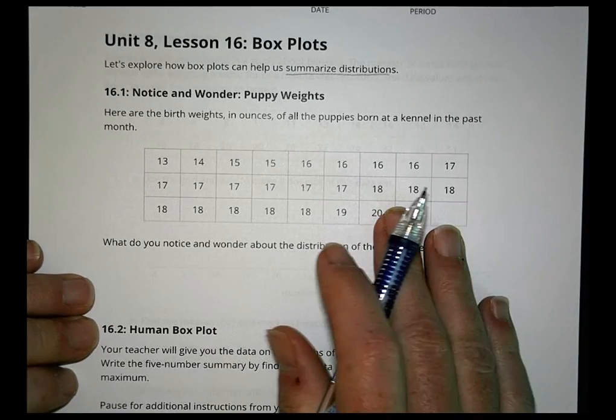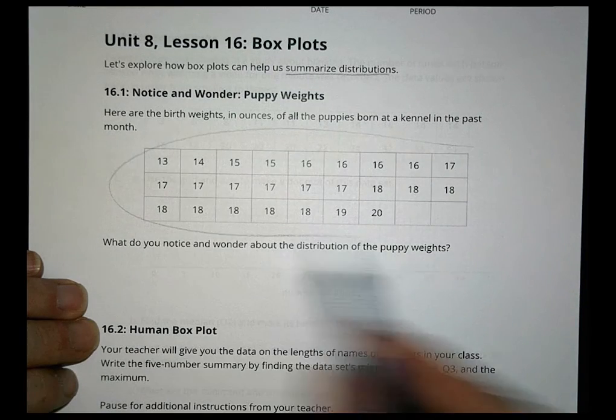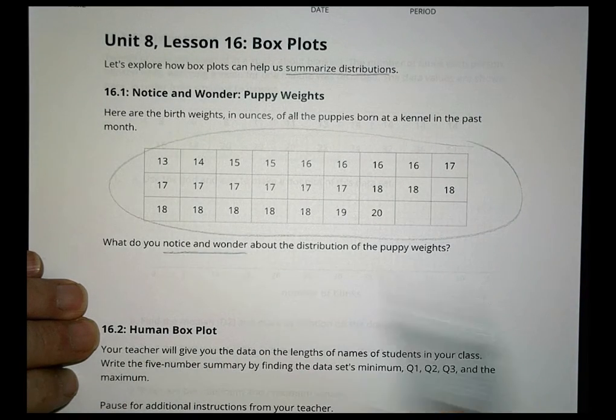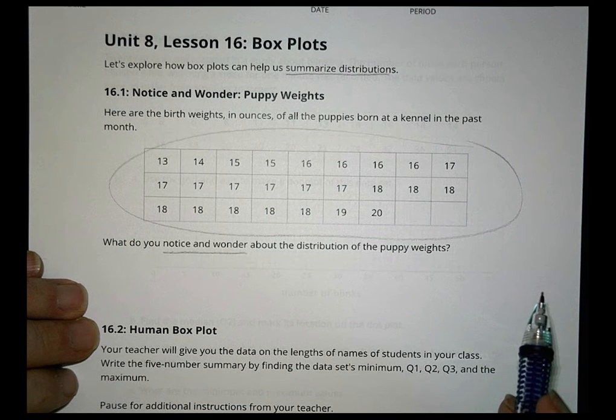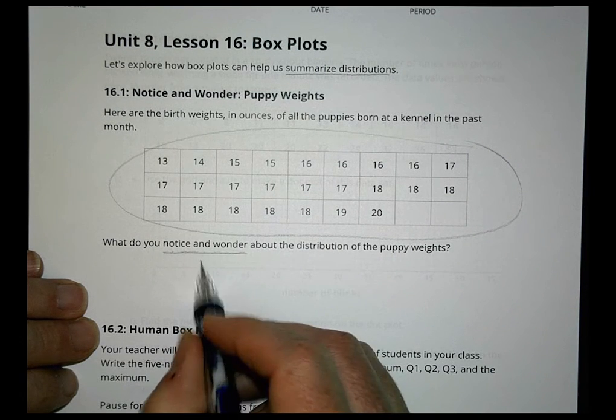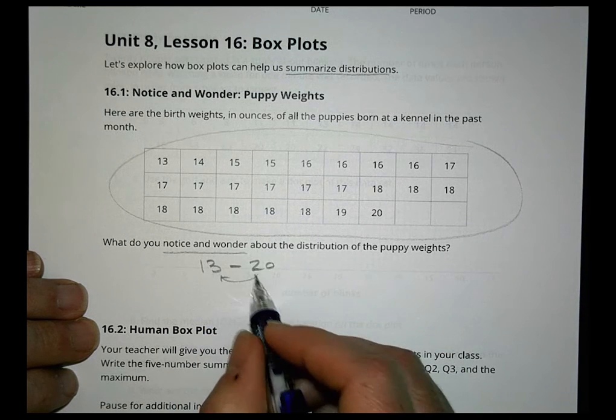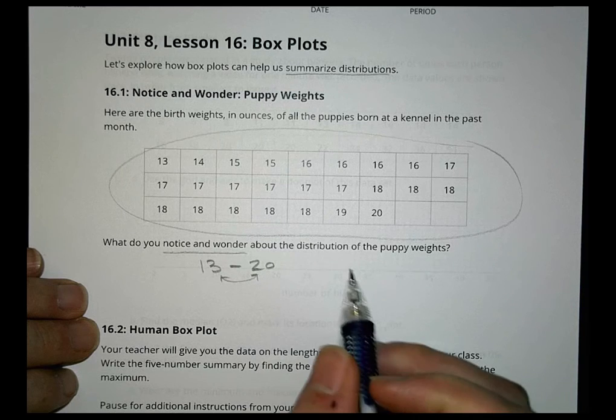So here are the birth weights in ounces of puppies born in the kennel. What they want you to take a look at is what do you notice and what do you wonder about the distribution of the puppy weights. A couple things that you might notice is that the range goes from 13 to 20, so there's about a 7 ounce difference between the smallest puppy and the largest puppy.